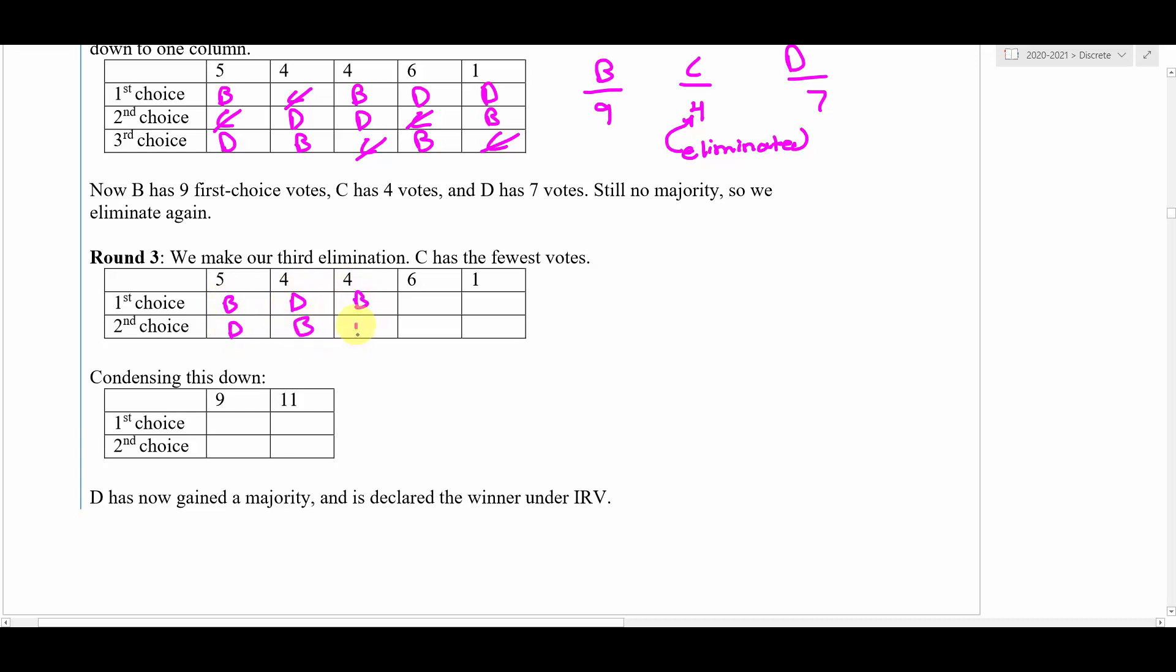Then we'll rewrite each of our columns. This will be B, D, this will be D, B, this will be B, D, this will be D, B, and this will be D, B. Then we'll condense. The B, D's—there's nine of those—and then the other 11 are going to be D, B's. If I tally up my first place votes after I condense, we get nine first place votes for B and 11 for D, so D has now gained a majority. At this point, D would be the IRV winner.